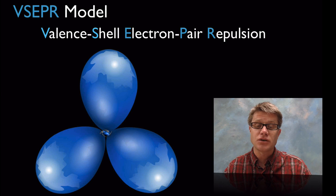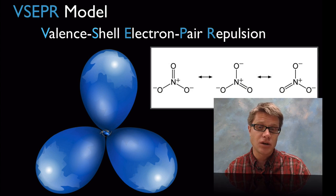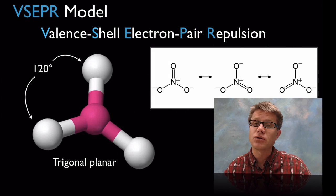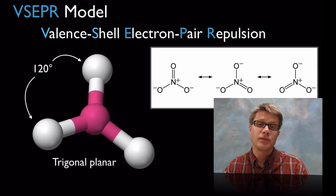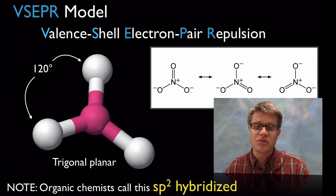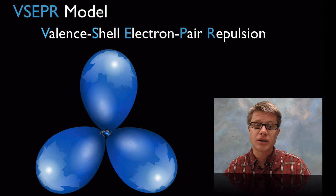Now let's go to three pairs of electrons — imagine holding three balloons. Something like nitrate: nitrogen in the middle, electrons around the outside. This gives a trigonal planar VSEPR model — three atoms coming out at 120-degree angles, flat in a plane. In organic chemistry we call this SP2 hybridized. We haven't gotten to full three-dimensional structure yet, but we're quickly going to get there.